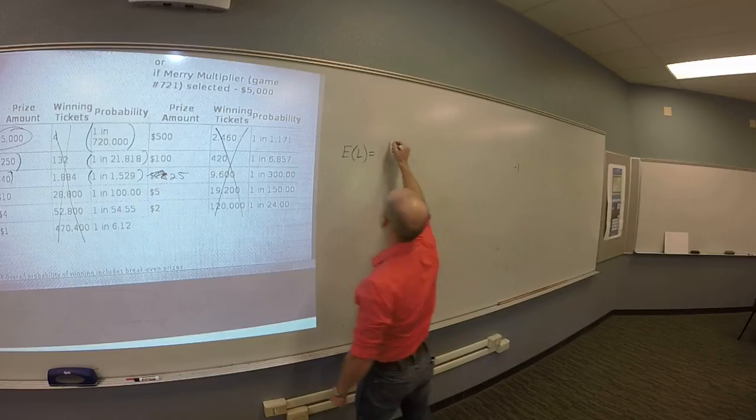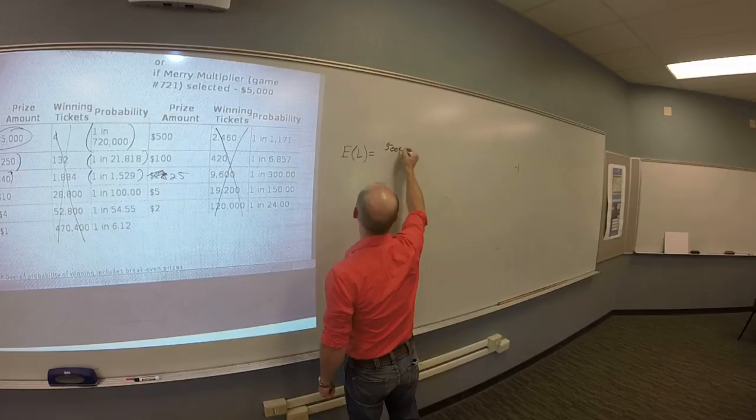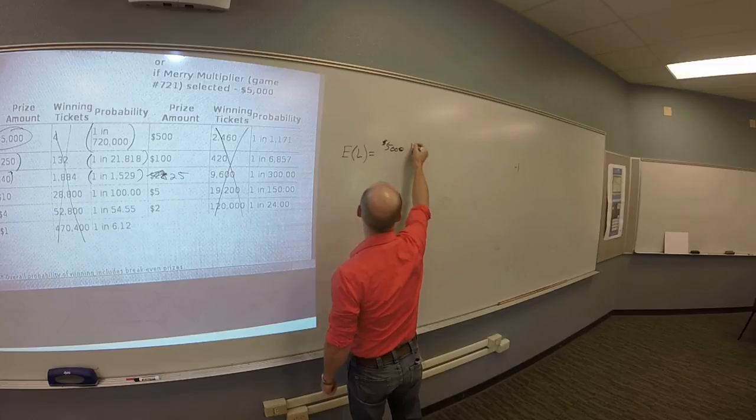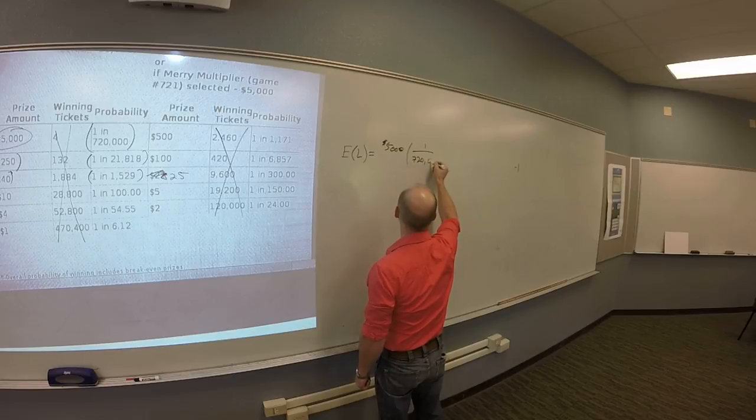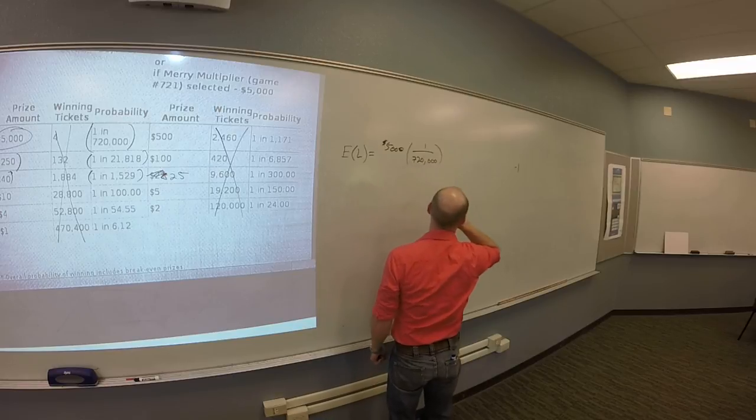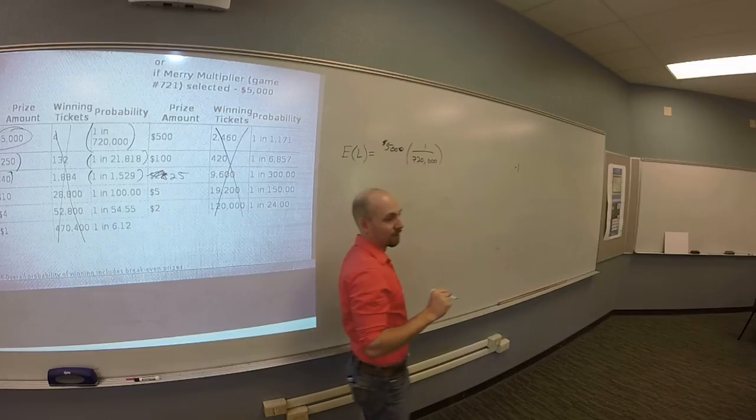Five thousand times one over seven hundred thousand. Okay, so we're going to make five thousand bucks and we're going to multiply that by the probability which is what? One hundred, seven hundred twenty thousand. Okay? And then what?